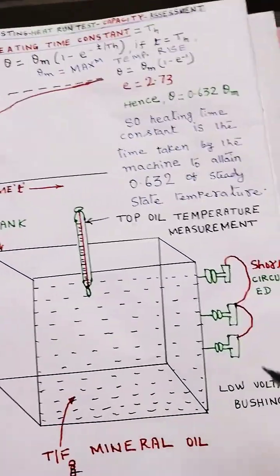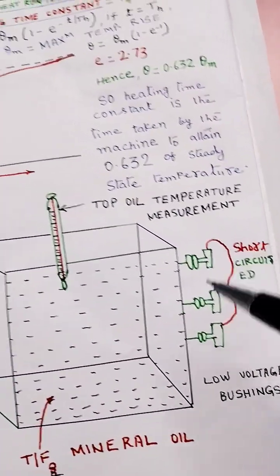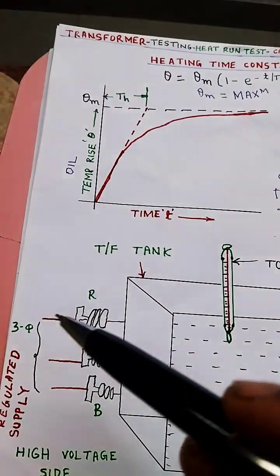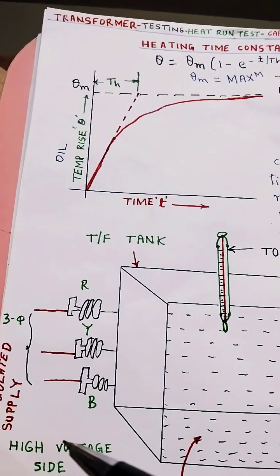This is transformer tank, low voltage side is short circuited and regulated voltage supply commensurate to losses of transformer is supplied from high voltage side.